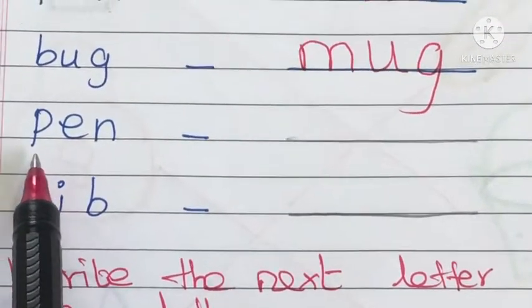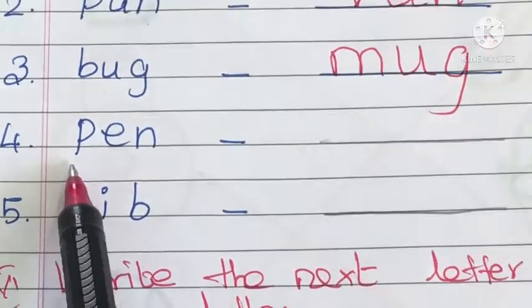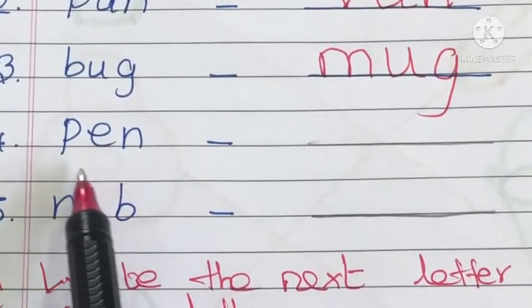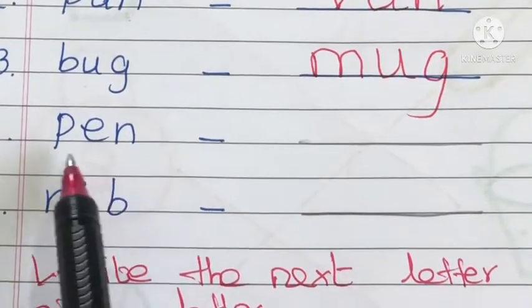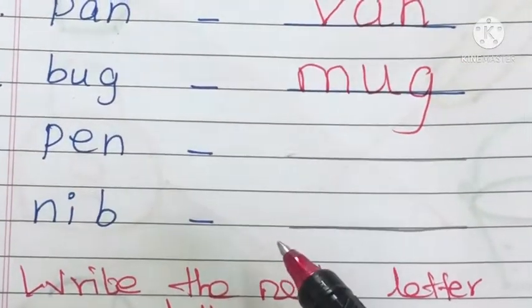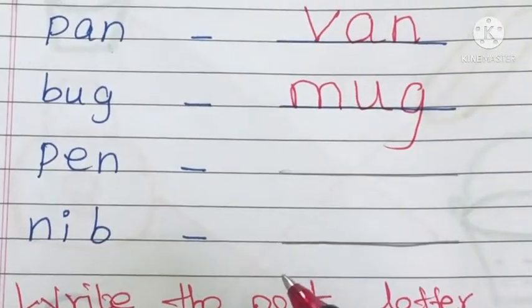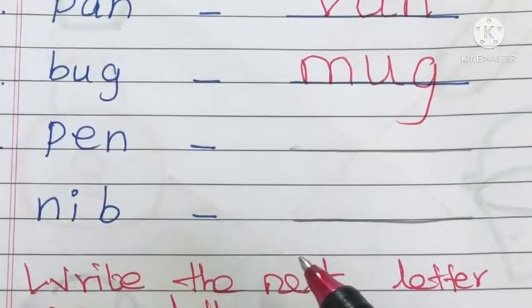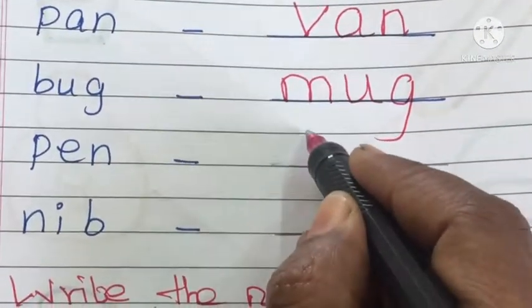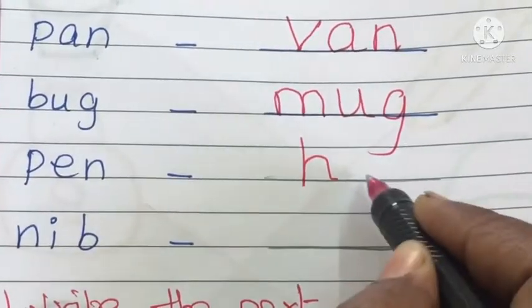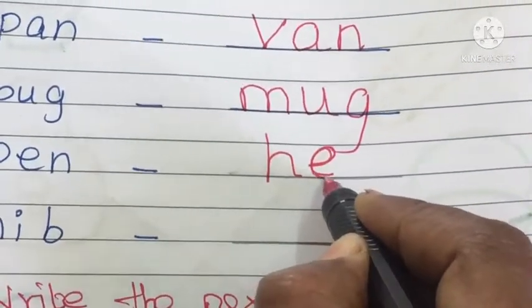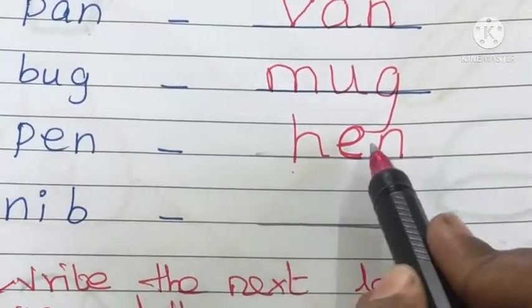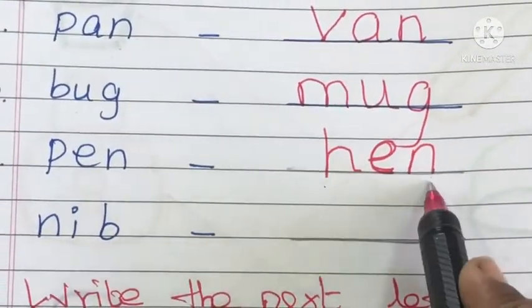See the next word: it is pen — P-E-N. What is the rhyming word for pen? We can write hen. Write it — H-E-N, hen.